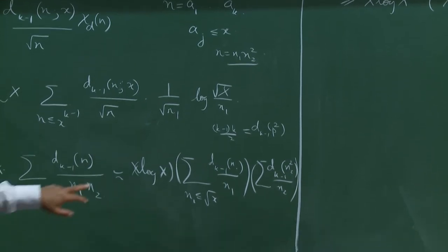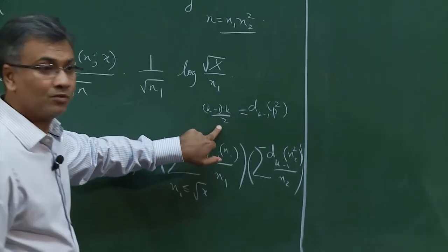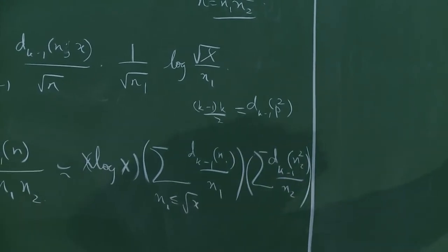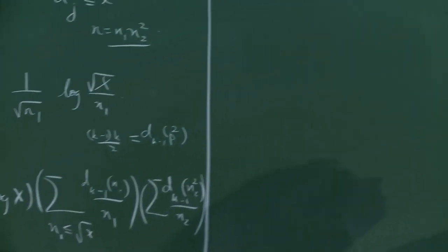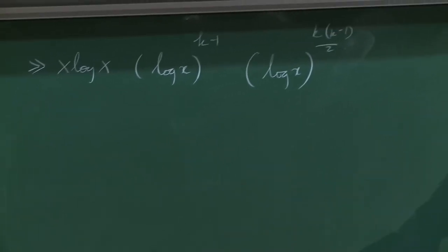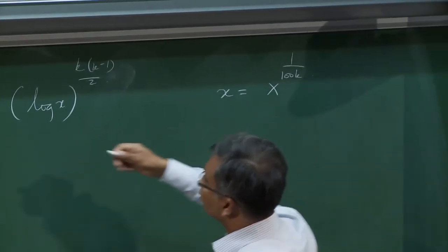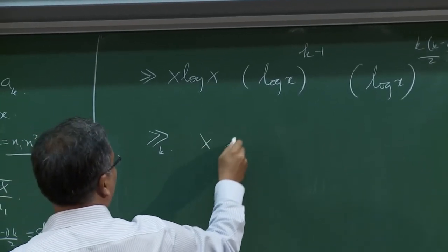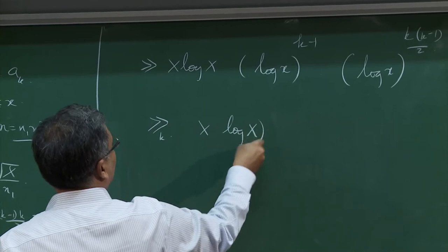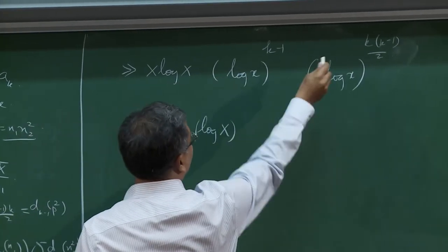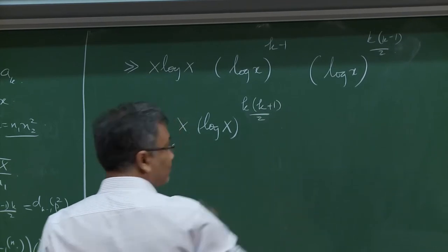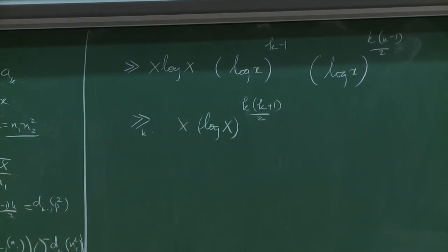It's a simple matter to evaluate these. The first term gives something like x log x to the k minus 1. For the second, you work out the power of log by computing d_{k-1}(p^2), which equals k(k-1)/2. So the power of log is k(k-1)/2. Since little x is a small power of capital X — maybe x^{1/(100k)} — all of this, forgetting the dependency on k, is as large as x log x to the... this is log x to the k, giving k(k+1)/2, which is what we wanted.